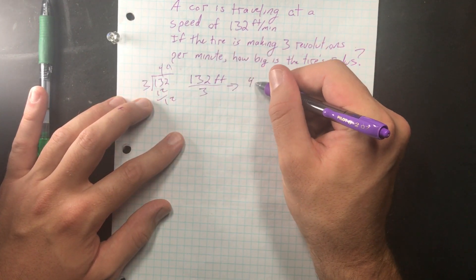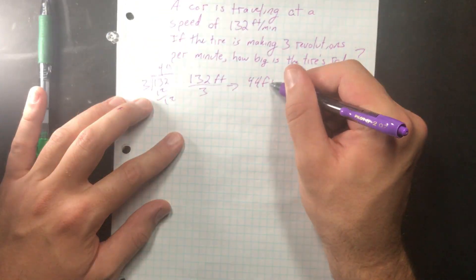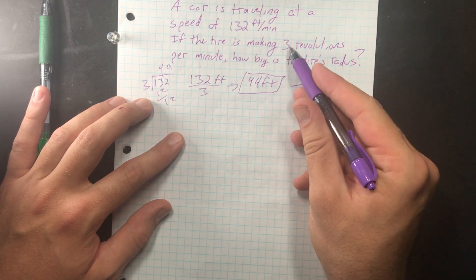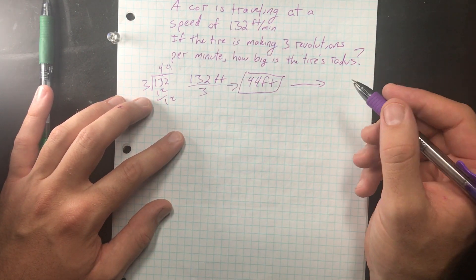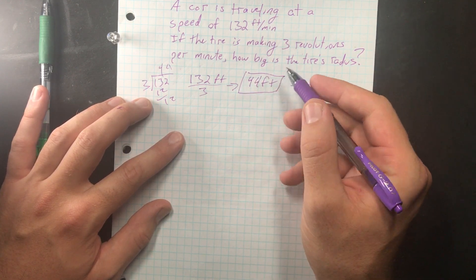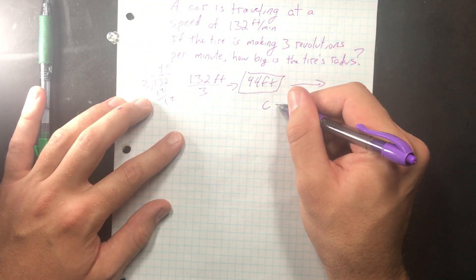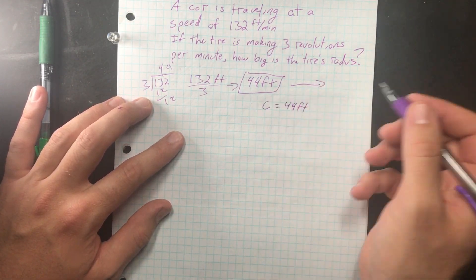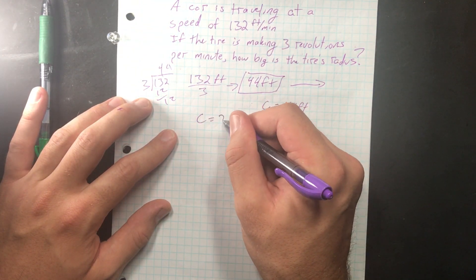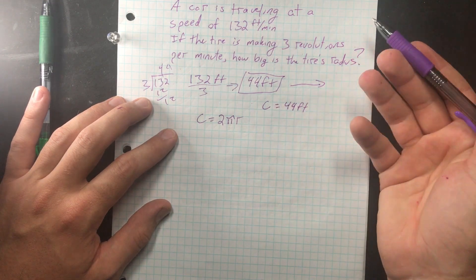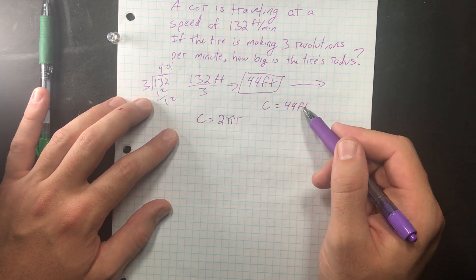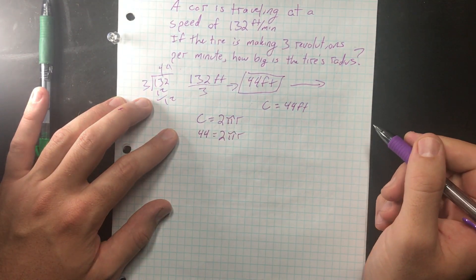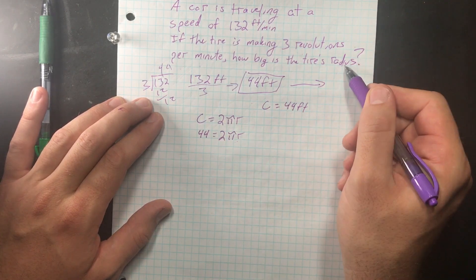So every time the tire revolves, that car is moving forward 44 feet. And it does that three times every minute to get to the 132 figure. So if every time it rotates, it goes 44 feet, that means the circumference is 44 feet. So how do we get to circumference from radius? Well, I'm a huge fan of writing out the formula first, 2πr, and then plugging in what we know. So since we know that the circumference is 44 feet, we can plug that in for our C. And now we just need to solve for r, we just need to solve for the radius.